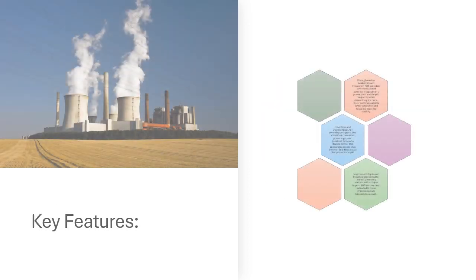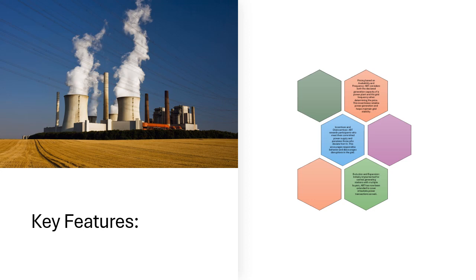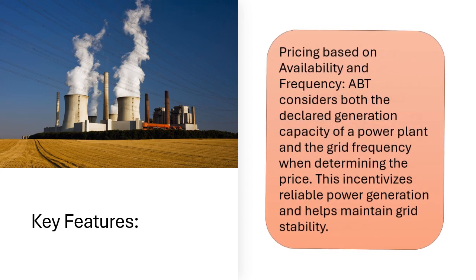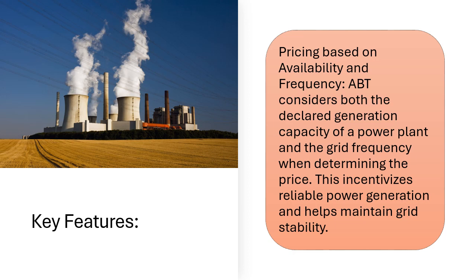Key Features: Pricing Based on Availability and Frequency. ABT considers both the declared generation capacity of a power plant and the grid frequency when determining the price. This incentivizes reliable power generation and helps maintain grid stability.